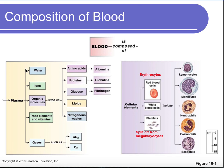Plasma is basically everything else in blood. Most of plasma is water. Dissolved in the water we have ions like sodium, potassium, chloride, and calcium. We also have organic molecules like amino acids, proteins like albumin, globulin, and fibrinogen. We have glucose, lipids, nitrogenous wastes, trace elements, vitamins, and gases like oxygen and carbon dioxide dissolved in the plasma.